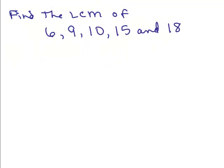Let's try another one. Put the video on pause and try getting the least common multiple of these five numbers using the building up method. Okay, here we go. 6 is 2 times 3, so we start off with that. Now we go to 9. 9 is 3 times 3, so I need another factor of 3. Now I've got the least common multiple of 6 and 9 — if you multiply it out, you would get 18. That's the least common multiple of 6 and 9.